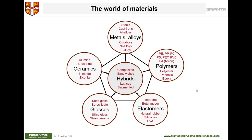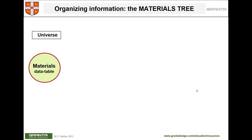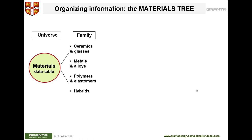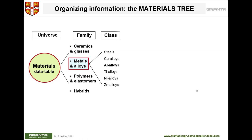With composites, we tailor the material to our application — not only designing with the material, but designing the material itself. In your design process, first think about the big categories: ceramics, metals, polymers, or composites. Once you've selected your family — say metals — you move to subcategories.